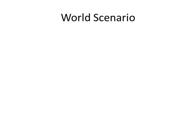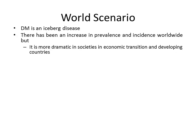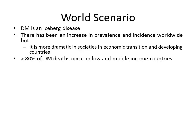Diabetes mellitus is a typical iceberg disease — only a small percentage of diabetics are clinically known to be diabetic, while a large percentage remains undiagnosed. There has been an increase in prevalence and incidence of diabetes throughout the world, but this increase has been more dramatic in societies in economic transition and in developing countries. More than 80% of deaths due to diabetes occur in low and middle income countries.